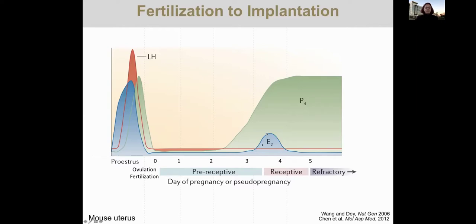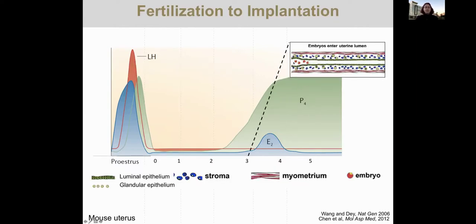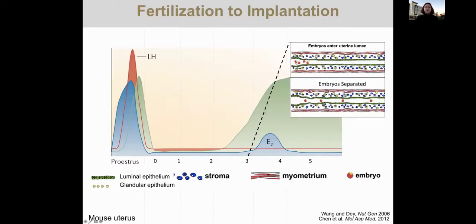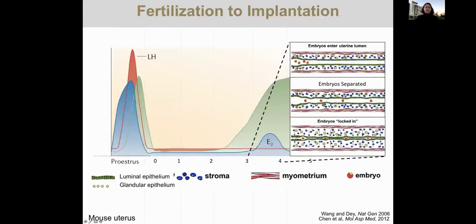In terms of embryo location, it is known that on the morning of day three, the embryos — the red circular structures — enter the uterine lumen, which is the green structure here. The blue here is mesenchyme or stroma, the yellow structures are uterine glands, and the red structure is the muscle. These embryos then move through the uterine horn and somehow evenly separate; uterine contractions are thought to contribute to this separation. Fluid resorption from the stroma pushes the walls of the uterine lumen together, locking the embryos in place before they attach. How the glands are connected to the lumen and how secretions reach the embryo is not well known.